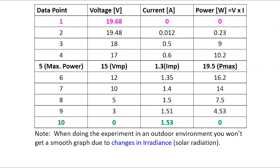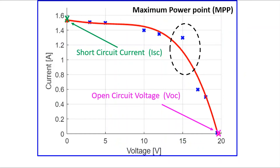Data point one is the open circuit voltage and data point ten is the short circuit current. In between, around the middle, you have the maximum power point. Finally, you will end up with a VI curve like this. There is a maximum power point — we call it MPP.